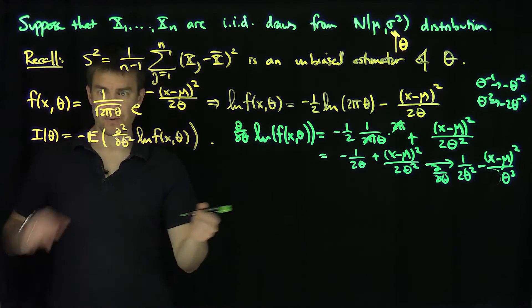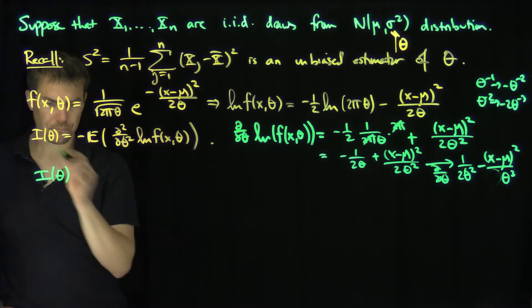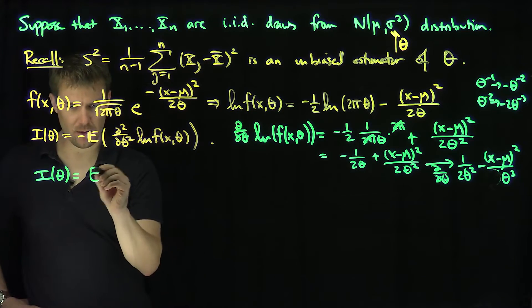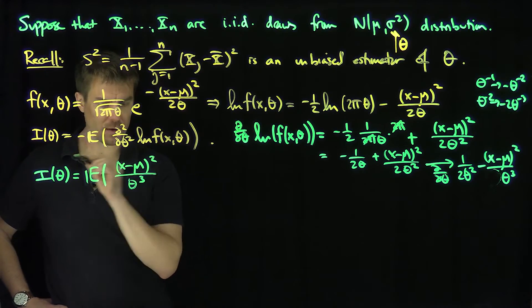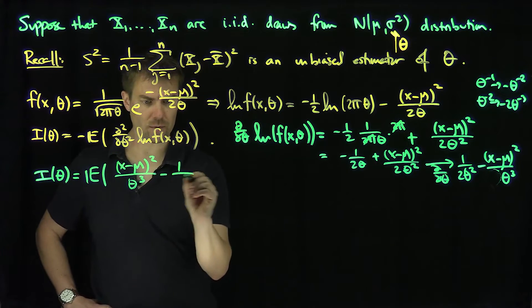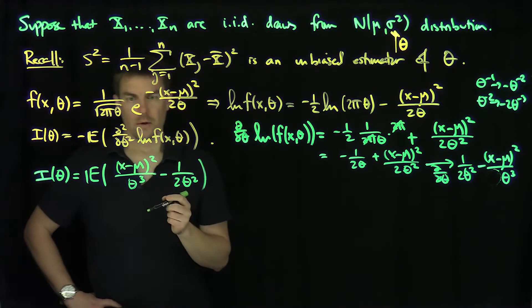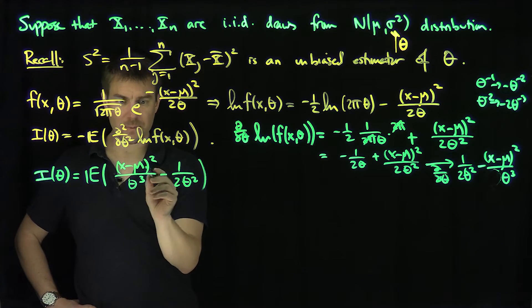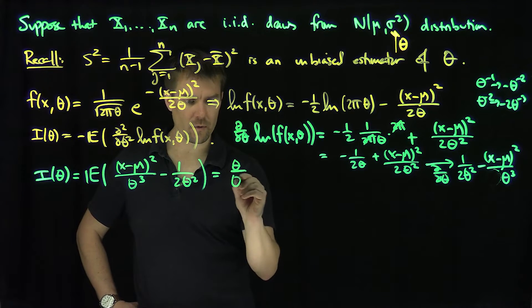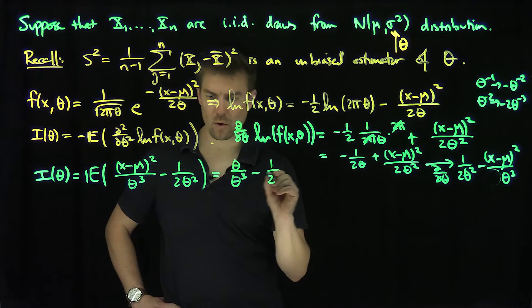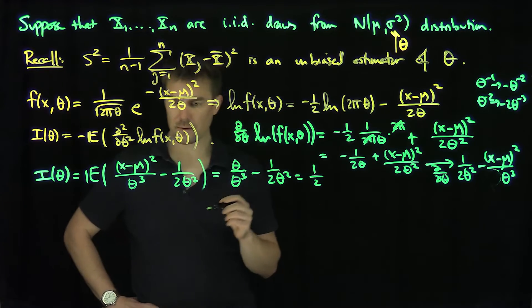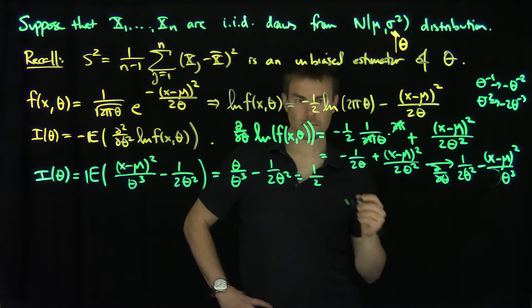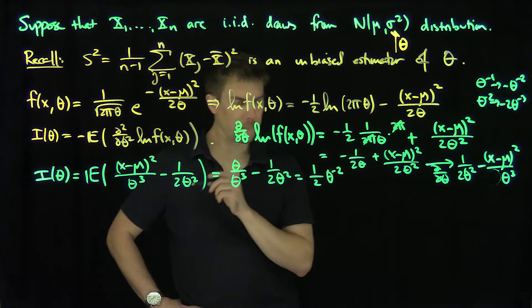Taking the negative expected value of this second derivative gives the Fisher information. The expected value of (x−μ)² is just the variance, which equals θ. So the first term becomes θ/θ³ = 1/θ², and subtracting 1/(2θ²) gives the Fisher information i(θ) = 1/(2θ²).